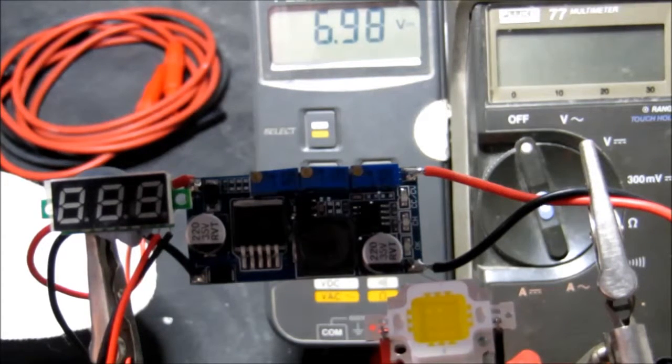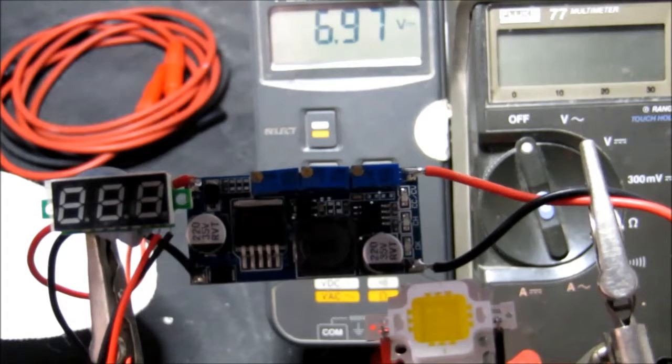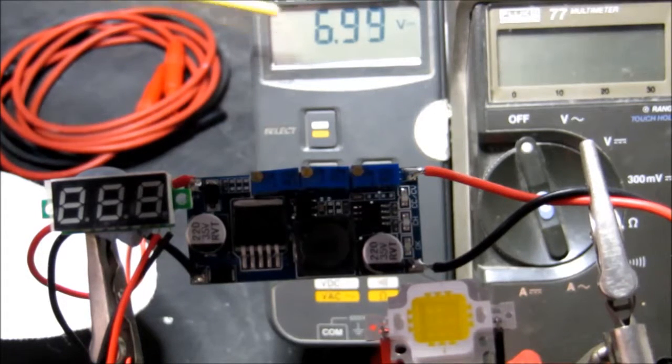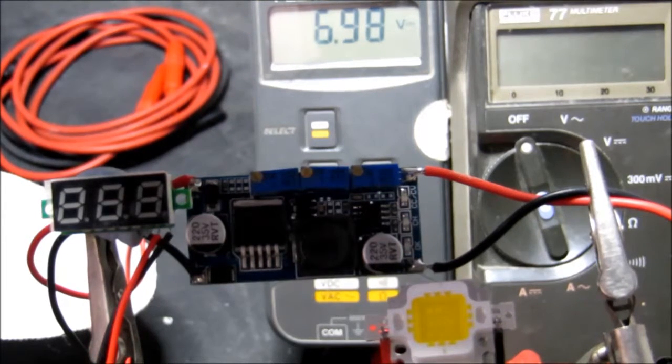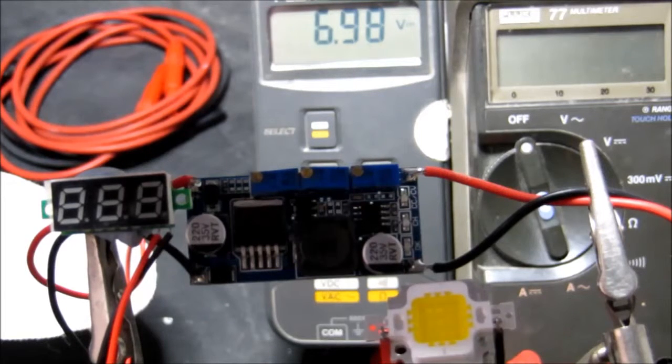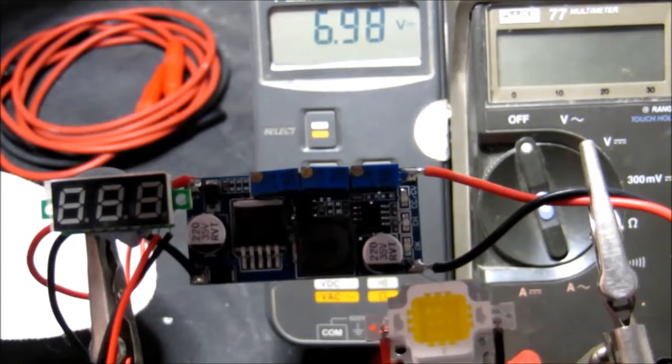In this particular instance, if we bring the power up, we can see on the voltage there at the moment just under seven volts. If we bring that up slightly, we'll see that the LEDs start to strike and glow.